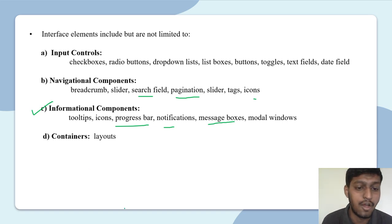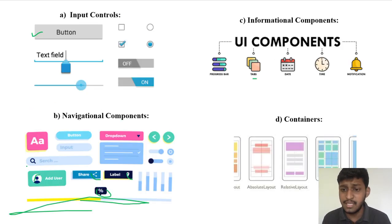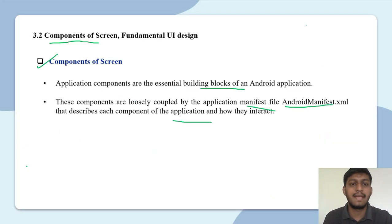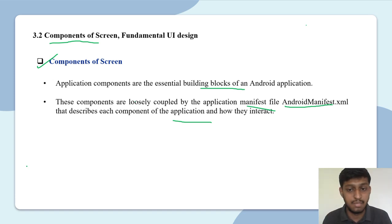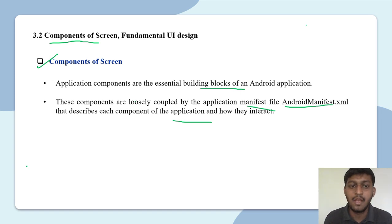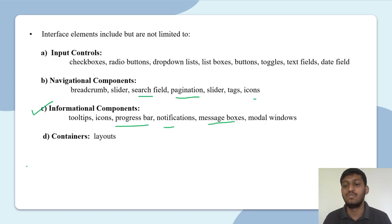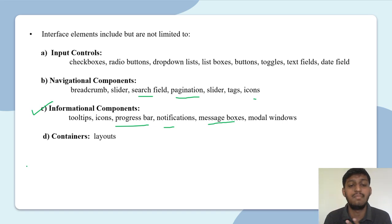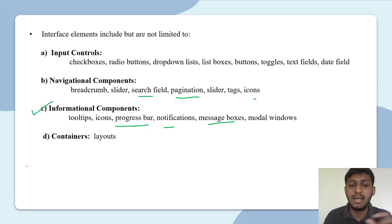Next are Containers or Layouts — we will see layouts in detail in the next video. So this is the component of a screen: building blocks made up of multiple components. Our components are linked to AndroidManifest.xml and describe how we interact with each other. Input controls handle user input, navigation components tell us what to show, and informational components provide information. We will see layouts in detail in the next video.